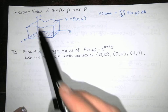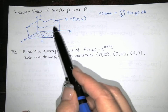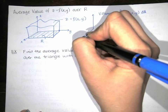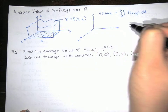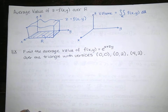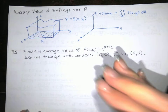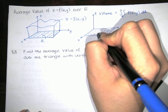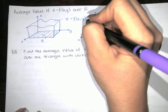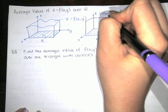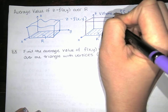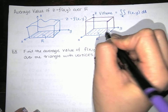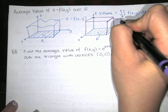If I want the average value of z, I'm looking for a value of z so that this volume would be exactly the same if I drew a cylinder that had the same region R on the bottom, but instead of having the function f of xy on top, it just had the average value of z. That z value that makes this volume the same as the volume under the surface is called the average value of z.